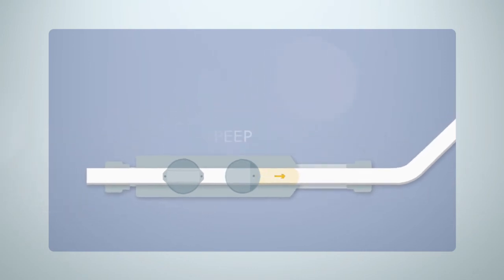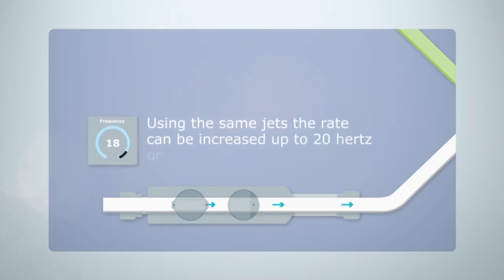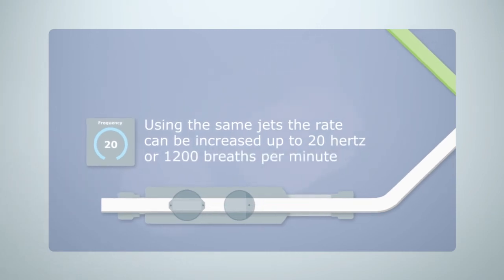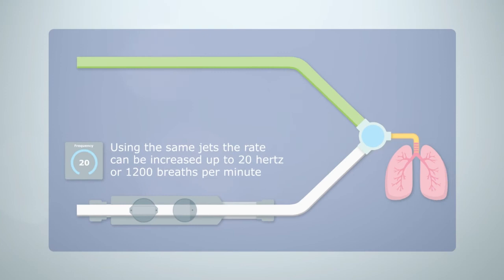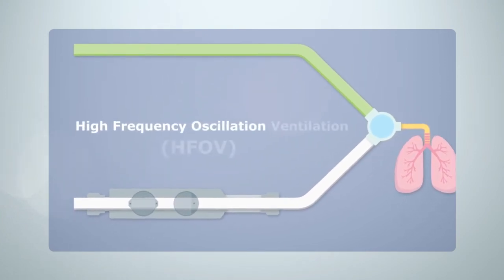Unlike a mechanical valve, air has no significant inertia or delay. Therefore using the same jets the rate can be increased easily up to 20 hertz or 1200 breaths per minute whilst managing the flow and pressure with immense precision. This enables the SLE 6000 to give high frequency oscillation ventilation.